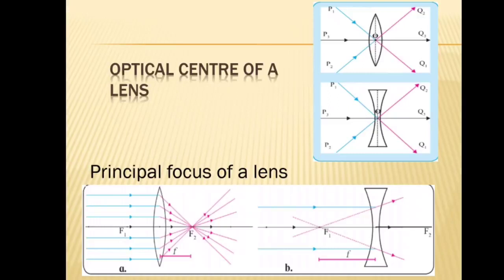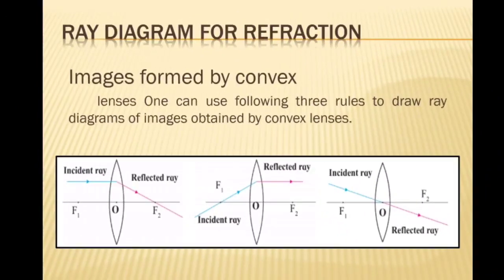Focal length: the distance between the optical center and the principal focus of a lens is called the focal length. Ray diagram for refraction: we have learned the rules for drawing ray diagrams for spherical mirrors. Similarly, one can obtain the images formed by lenses with the help of ray diagrams.